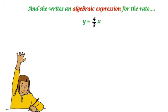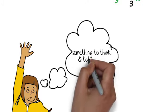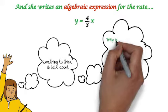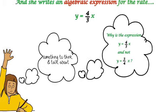But now she's pondering something to think about here, and to talk about. Why do you think it's y equals four-thirds x, and not, for example, y equals three over four x? Something to think about.